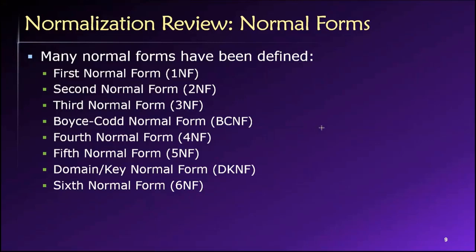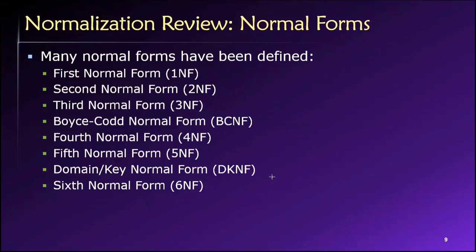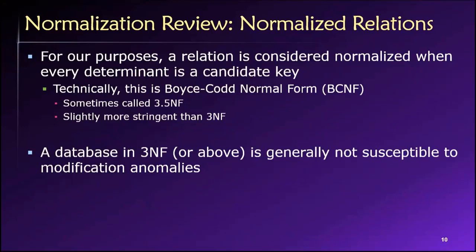For our purposes, since we're designing for business, we can stop at third normal form or BCNF. But if you're designing something like an air traffic control system, you probably want to use higher level normal forms because it's such a mission-critical use case. If you go work for the Jet Propulsion Laboratory and you're designing the database for the next Mars rover, don't stop at Boyce-Codd normal form — use higher level normal forms, because you want it to work with no anomalies creeping into your data.